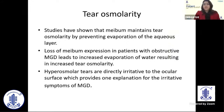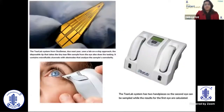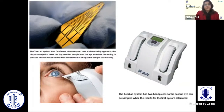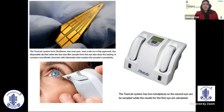An important part of MGD examination is tear osmolarity, where the osmolarity of the tear increases in patients with evaporative dry eye because of ineffective meibum delivery to the tear film. TearLab has developed a lab-on-chip approach using a disposable tip that takes a tiny tear film sample from the eye and tests it. It contains microfluidic channels with electrodes that analyze the sample's osmolarity, giving a quick result within seconds.